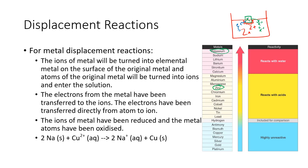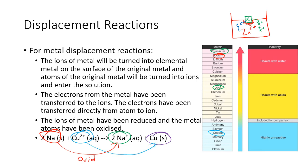Here's an example: sodium is much more reactive than copper, so when you add sodium into a copper solution, the sodium will turn into sodium ions and the copper will end up as copper solid. The sodium has undergone oxidation, losing its electrons and forcing those electrons onto the copper, and the copper has undergone reduction.